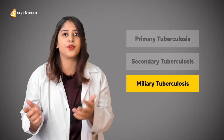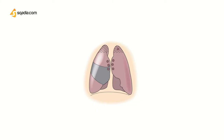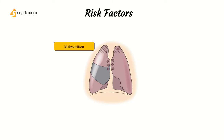Not everyone acquires tuberculosis. There are some risk factors associated with the acquisition of this disease. These risk factors include malnutrition. Malnutrition causes tuberculosis because it decreases immunity. When there is decreased immunity, we can acquire many different diseases including tuberculosis.